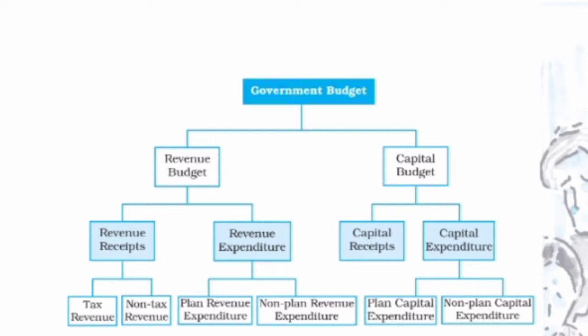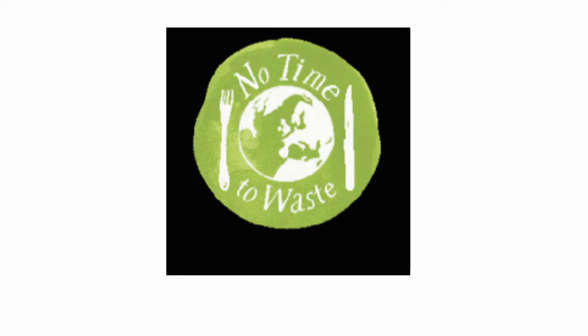Revenue expenditure and capital expenditure — these two are the components of the government budget itself. Under the government budget, there is revenue expenditure and capital expenditure. The difference question is for 4 marks, and there is a question asked for 4 marks in your question bank. So without wasting time, we will directly move to the topic.